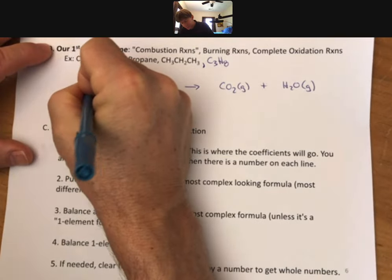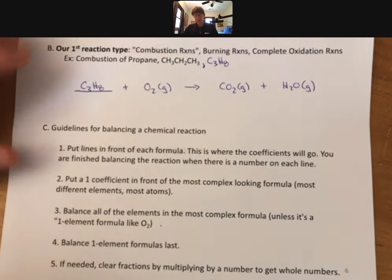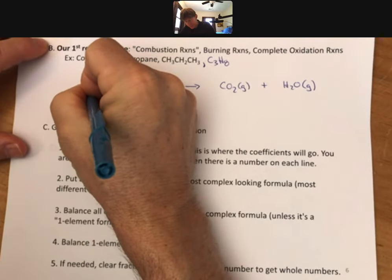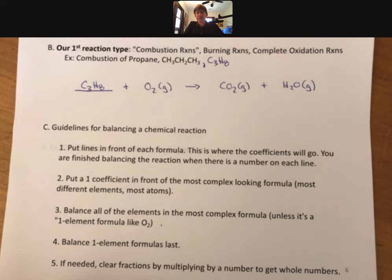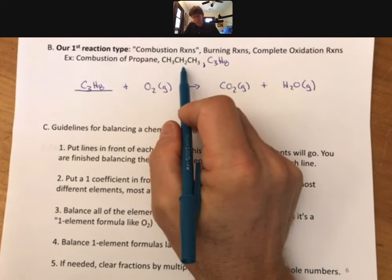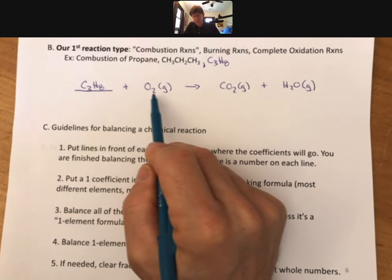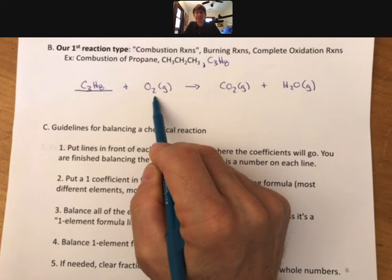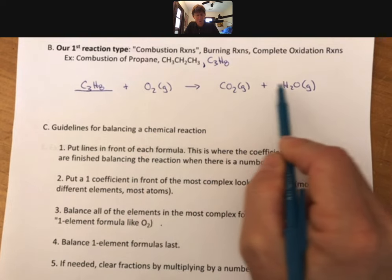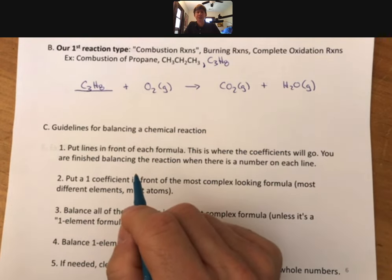We'll put our propane here. That's a C3. That's a combustion reaction. Whenever I tell you combustion of something with a formula, you put it on this line, you write the other reactant is oxygen and the products are carbon dioxide and H2O. Sometimes there's a third one but I have to tell you what that is.